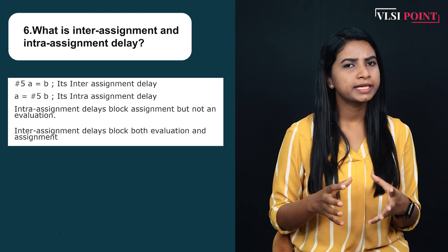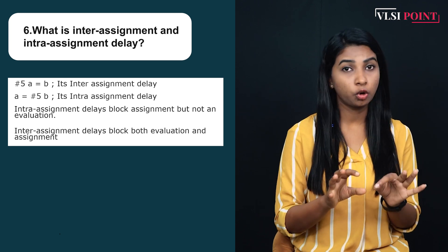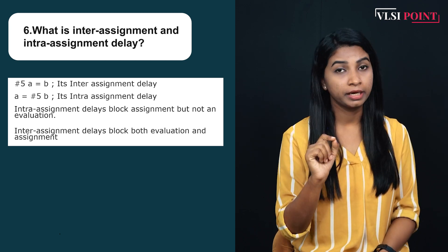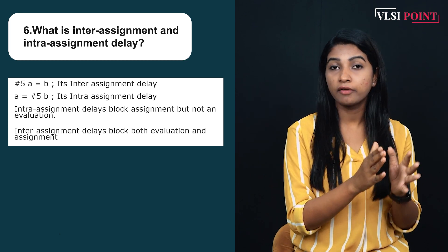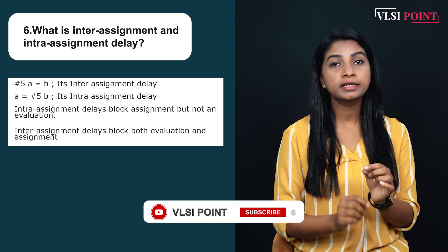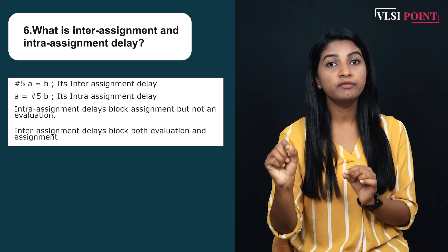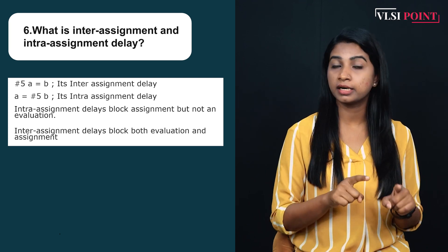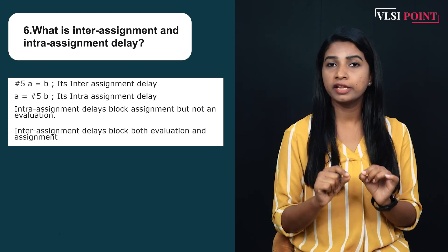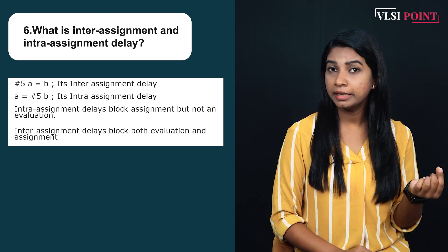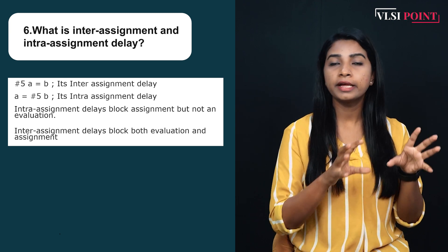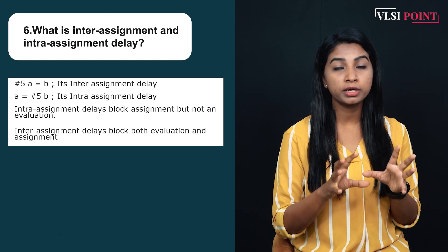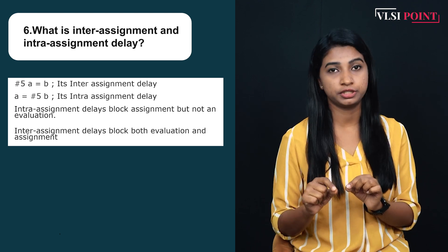In intra assignment delay, it blocks the assignment but not the evaluation. However, in case of inter assignment delay, it is written #5 A = B. So the value of B will be assigned to A after five time units — but after five time units, whatever be the current value of B at that moment will be assigned to A. So inter assignment delay blocks both the evaluation and the assignment. Whenever your interviewer asks the difference: inter assignment delay blocks both assignment and evaluation, whereas intra assignment delay blocks the assignment but not the evaluation. This is the major difference.